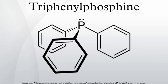Triphenylphosphine undergoes slow oxidation by air to give triphenylphosphine oxide, Ph3PO: 2PPh3 + O2 → 2OPPh3. This impurity can be removed by recrystallization of PPh3 from either hot ethanol or hot isopropanol. This method capitalizes on the fact that OPPh3 is more polar and hence more soluble in polar solvents than PPh3.